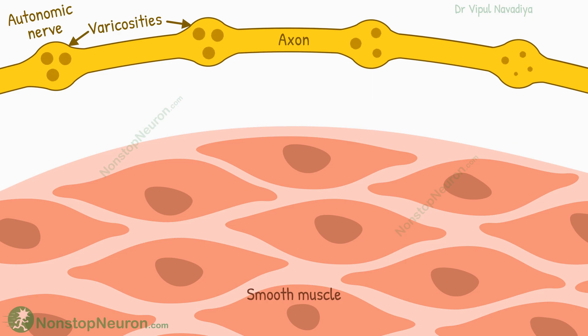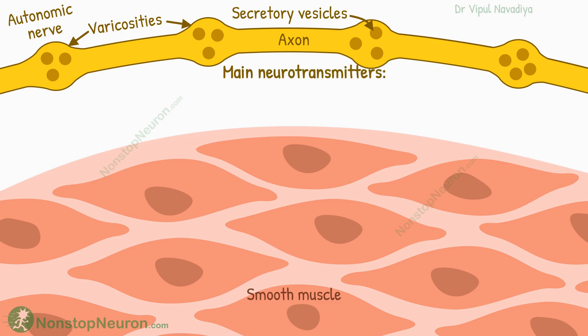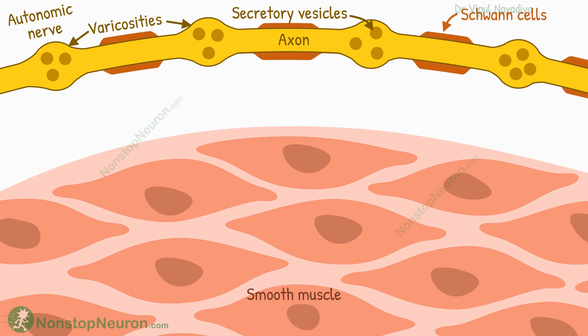The varicosities contain secretory vesicles containing neurotransmitters. The main neurotransmitters in the autonomic nervous system are acetylcholine and noradrenaline. At the points where varicosities occur, the supportive Schwann cells, which are responsible for insulating and protecting neurons, are interrupted. This provides gaps for the release of neurotransmitters.